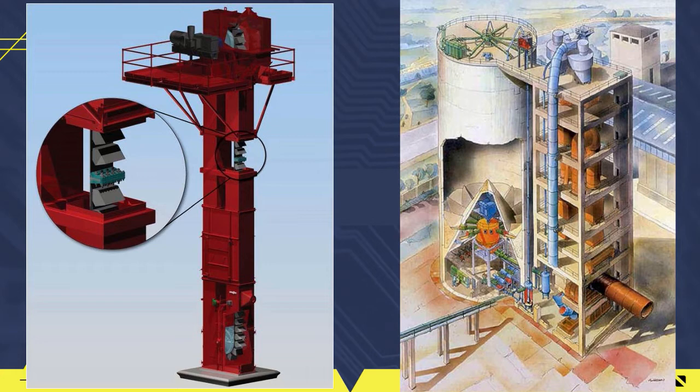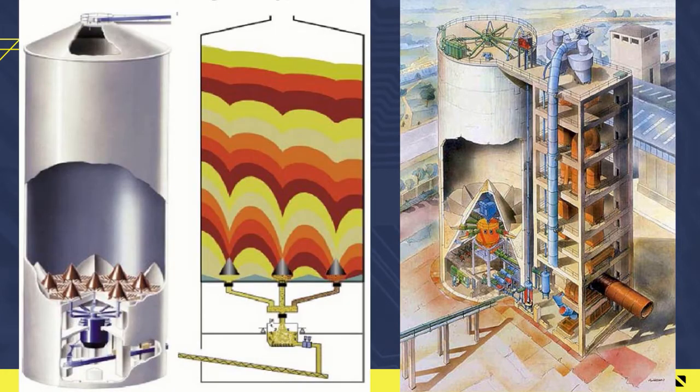The raw meal silo is a building material storage space that serves to accommodate the product of the milling process of raw materials in the form of raw meal. The raw meal silo is not only used to accommodate the raw flour, but also for the homogenization process, so that the quality of the raw meal with various qualities becomes uniform.